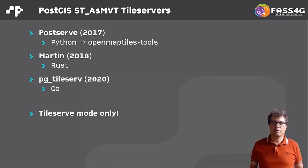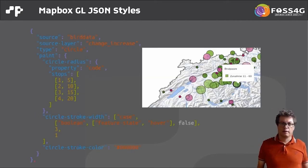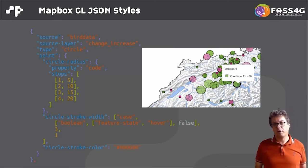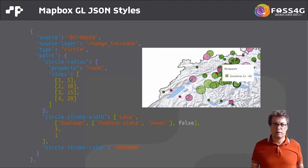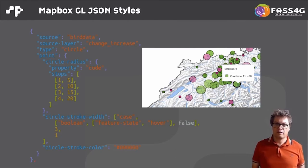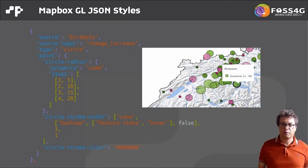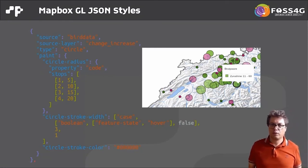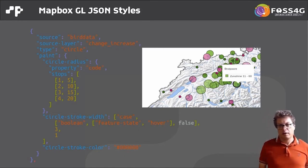That covers the major tile servers. The next topic is the client side of vector tile display, which is also an important part of the vector tile stack. The major styling language is MapBox Style JSON, which is a JSON-based styling language. You have formulas for radius, sizes, and colors — it's quite a readable language.